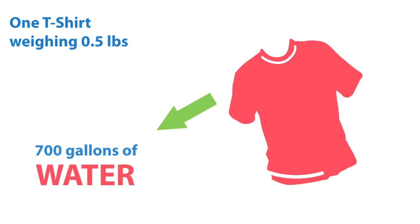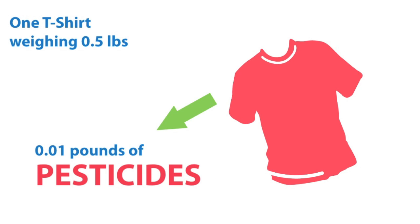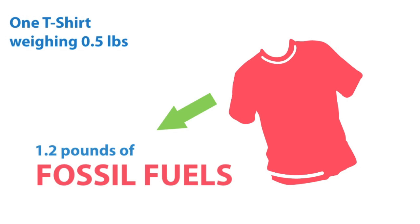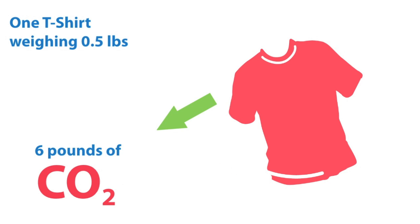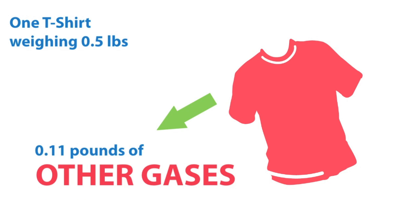According to a 2009 study, producing the average t-shirt requires about 700 gallons of water, along with various amounts of fertilizers, pesticides, fossil fuels, carbon dioxide, and other gases, all involved in the growing and manufacturing process.